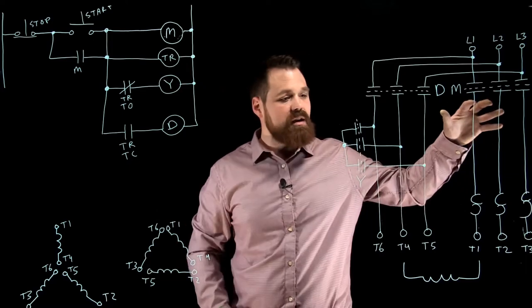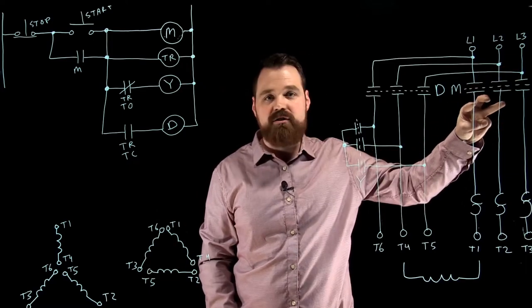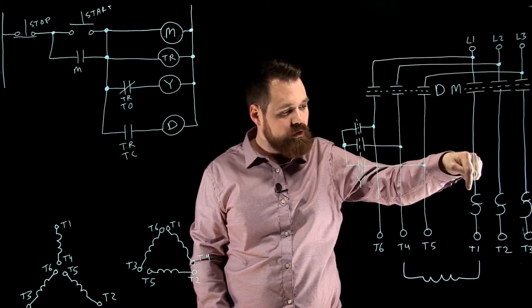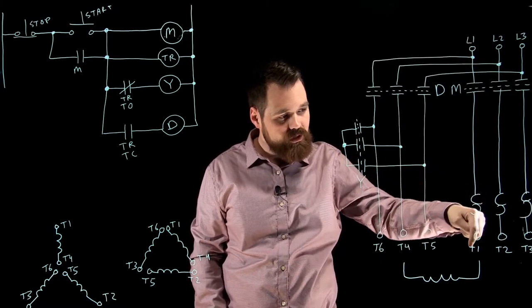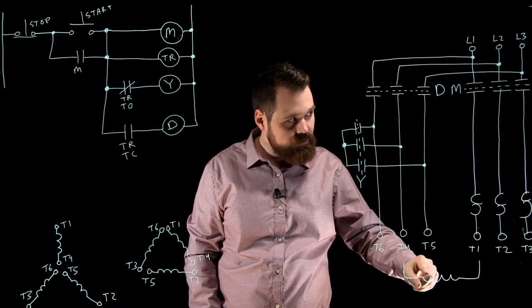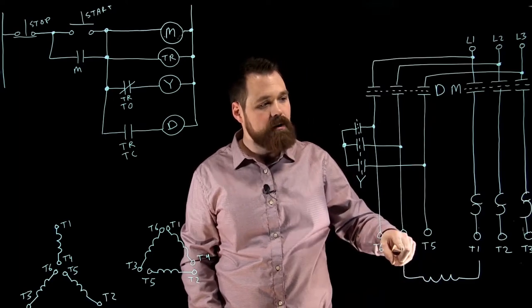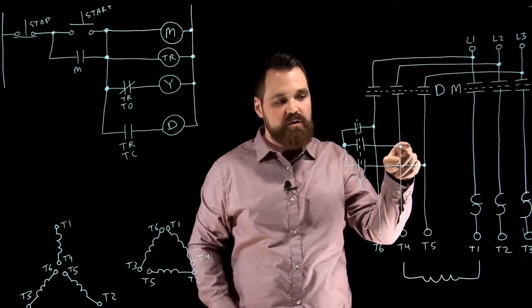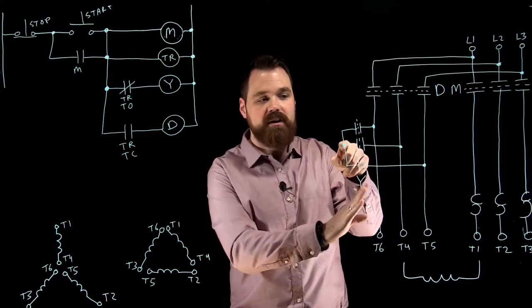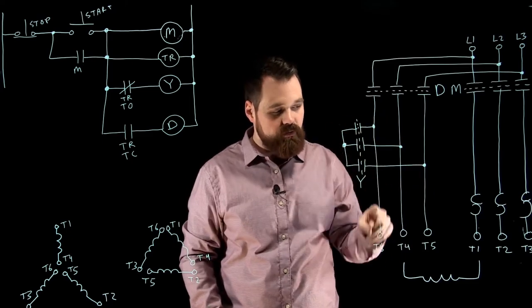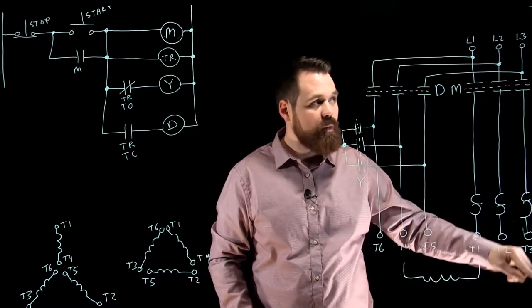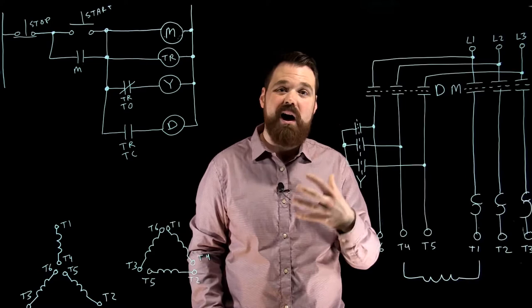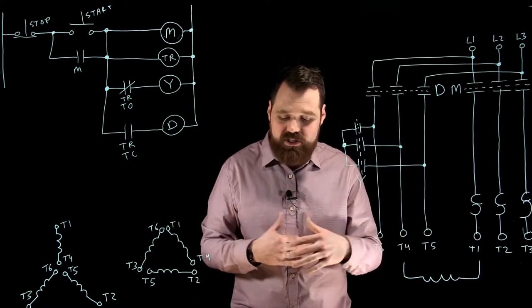What that means is I'm going to have these three contacts close, and I have current flowing through line 1 through my set of overloads, through my coil T1 through T4, and then back up to here. These sets of contacts are open, so what I do is I go through this Y point and then back over through T6, back up T3, and I'm basically starting in that Y formation, so I see that reduced current.